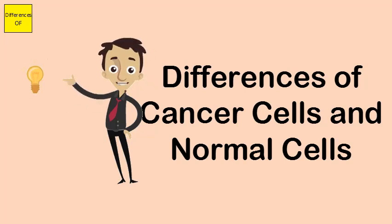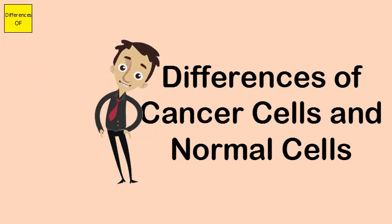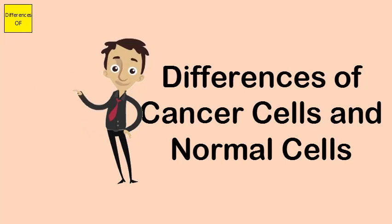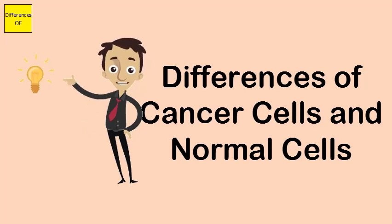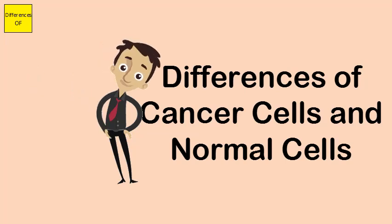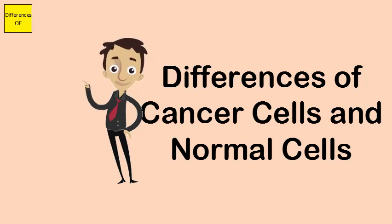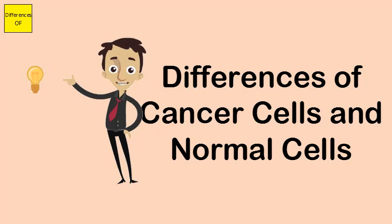Normal cells grow and divide in a controlled manner, follow a predictable life cycle, and stop dividing when too much of their kind is present. Cancer cells do not stop growing, resulting in the appearance of a tumor, a cluster of mutant cells.